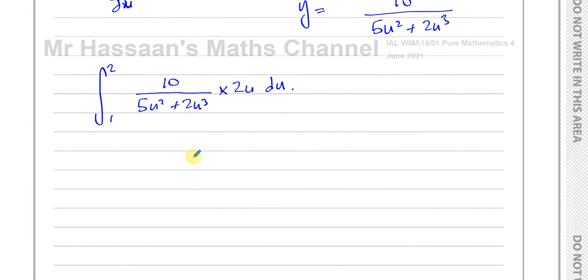Let's just simplify this a little bit first. I can take out 10 times 2, which is 20. So I'll have the limits of 2 and 1, 20 outside. You're going to have u over, and I'm going to take out u squared as common here. That cancels with that. So you're left with 20, limits 1 and 2, of 1 over u times 5 plus 2u. Integrate that with respect to u.